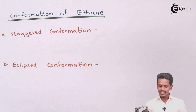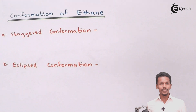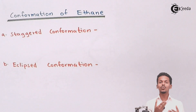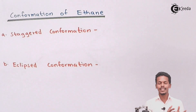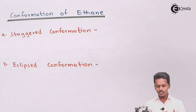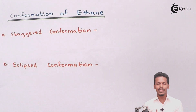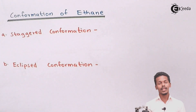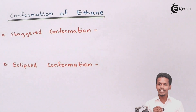The two main conformations observed in ethane are: staggered conformation and eclipsed conformation. Let us discuss each of them in detail.